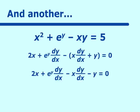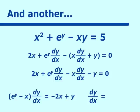Putting all dy/dx terms on one side: e to the y minus x, times dy/dx, equals negative 2x plus y. Solving for dy/dx gives negative 2x plus y over e to the y minus x. If you prefer, rewrite this as y minus 2x over e to the y minus x, since the negative out front can be a little confusing.